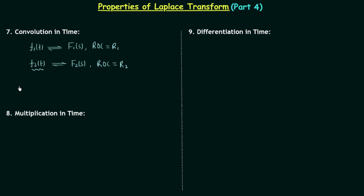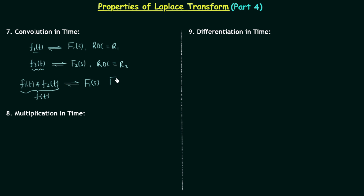Now if we perform the convolution f1(t) * f2(t) — that is, convolution between two time domain signals — we get a new time domain signal. For this new signal we will have a new Laplace transform, which will be equal to the old Laplace transform of the first signal multiplied by the old Laplace transform of the second signal, and the region of convergence will be r1 intersection r2.